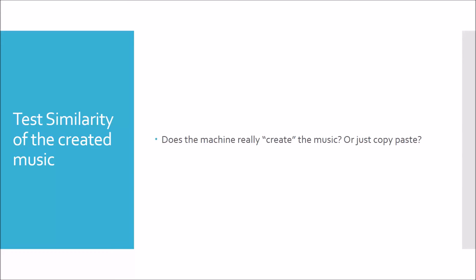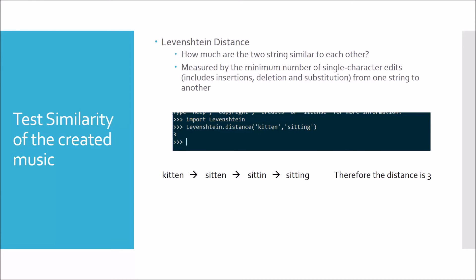Now I'm curious: how novel are those music pieces? In other words, how much similarity is there between the generated music and the original music? Does the model really create music or just copy-paste some fraction of the original music? Therefore, I chose Levenshtein distance as the measurement. It is measured by the minimum number of single-character edits from one string to another. Using the example of 'kitten' and 'sitting', it needs three modifications, so their distance is 3.